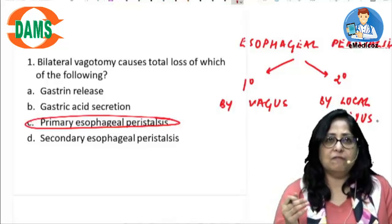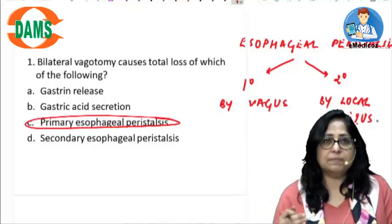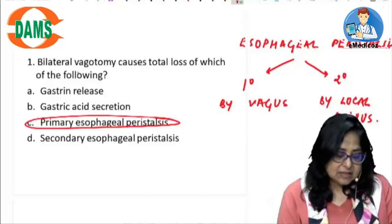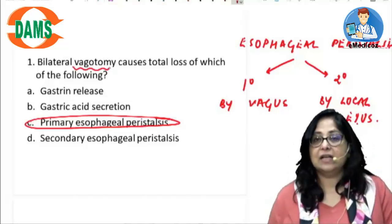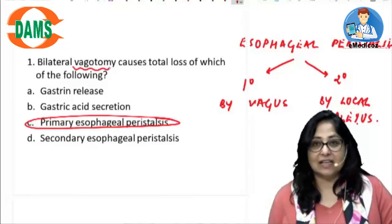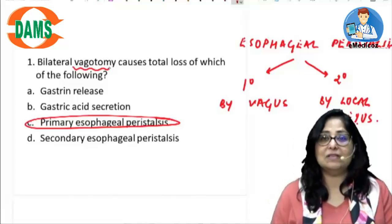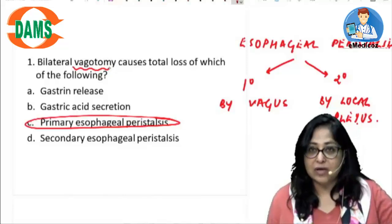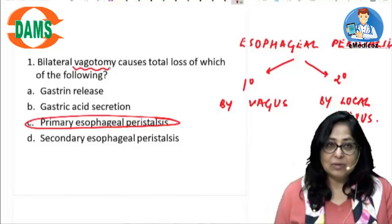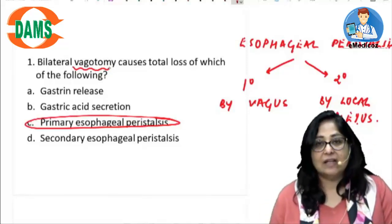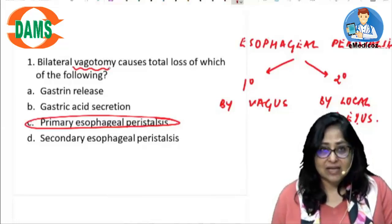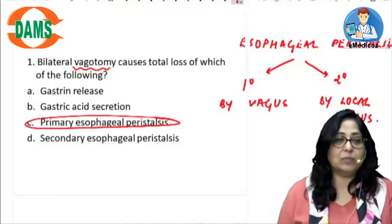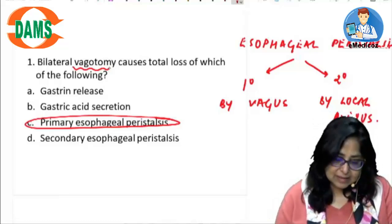What is the effect of vagotomy on gastrin release and gastric acid secretion? The vagus is involved in both, but this is not the primary mechanism for their release. So bilateral vagotomy will definitely reduce gastrin release and gastric acid secretion, but will not cause a total loss. Total loss will be of primary esophageal peristalsis.